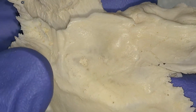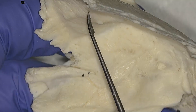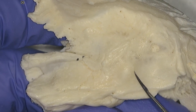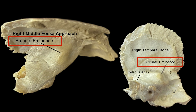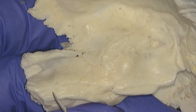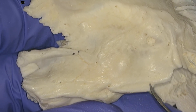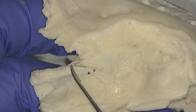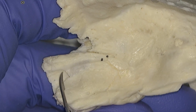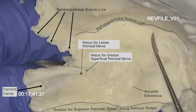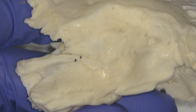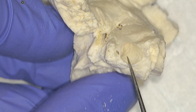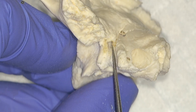Looking into the middle fossa, we again have a view of the squamosal portion of the temporal bone, the squamosal petrous suture line, and the petrous pyramid. Other key landmarks include the arcuate eminence, the groove for the superior petrosal sinus along the petrous ridge, and the foramen for the greater superficial petrosal nerve. The sphenopetrous suture houses the foramen spinosum for the middle meningeal artery. The carotid canal and foramen lacerum are also seen. Looking along the axis of the petrous pyramid, we can see the carotid canal and the bony portion of the eustachian tube and tensor tympani semi-canal.